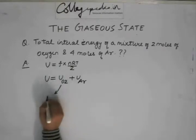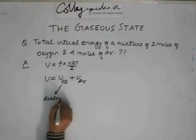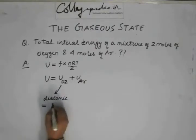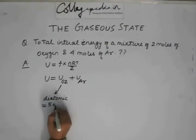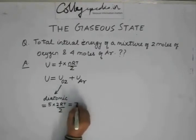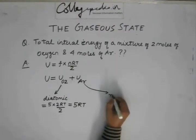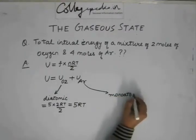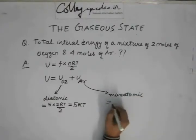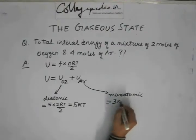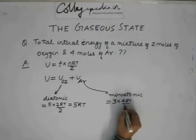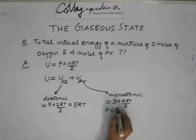The internal energy of oxygen, which is a diatomic gas, has 5 degrees of freedom. So its internal energy equals 5 × 2 × RT/2, which equals 5RT. For argon, a monatomic gas, the degrees of freedom are 3, and the number of moles is 4, giving 3 × 4 × RT/2, which equals 6RT.